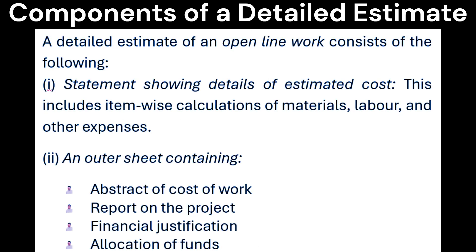Components of detailed estimates: A detailed estimate of an open line work consists of the following. First, a statement showing details of estimated cost. This includes item-wise calculations of materials, labor, and other expenses.